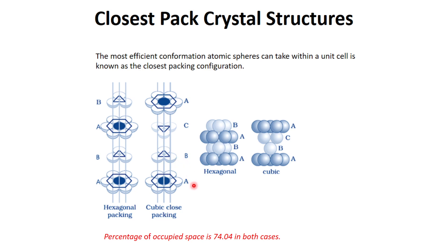After C, the structure repeats itself and again we have layer A, so the combination is ABC ABC. This is the difference between two types of closest pack structures.